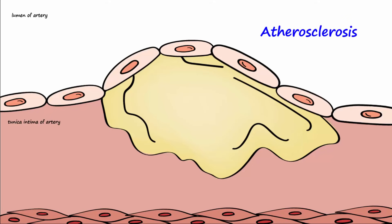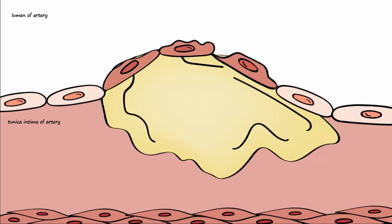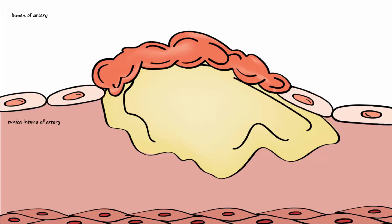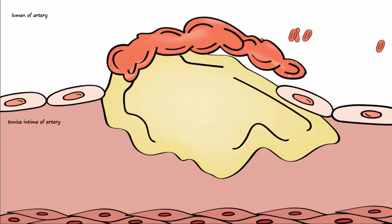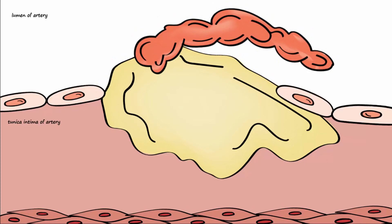If the endothelial cells over the plaque are compromised, blood clots can form on the vessel wall. Remember that healthy endothelial cells normally express inhibitors of clotting, but now since they are damaged, they no longer do this. Over time, ruptured areas of plaque may create a situation where an area of plaque may jut out into the vessel lumen. A clot that forms and attaches to the wall is called a thrombus. If the clot breaks loose from the arterial wall and floats downstream to even smaller vessels, it is called an embolus.